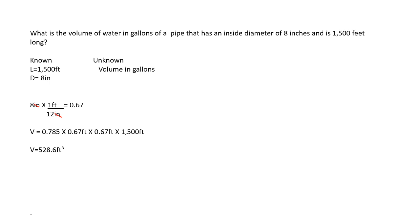The answer is looking for gallons, so we're going to have to do some more converting. There are 7.48 gallons in a cubic foot. To get that to cancel out, the cubic feet will go on the bottom. So 528.6 cubic feet times 7.48 gallons per cubic foot — cubic feet cancel out — and that leaves you with an answer of 3,953.92 gallons. Rounding to one decimal, you get 3,953.9 gallons.